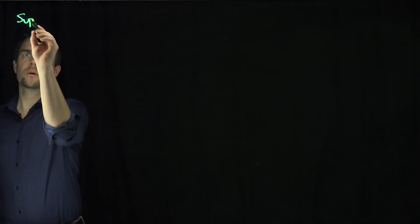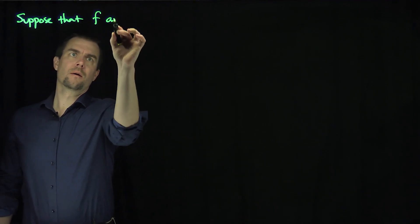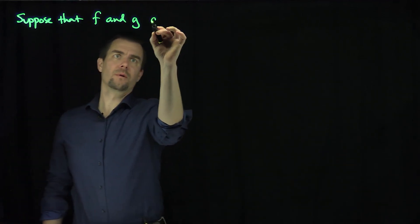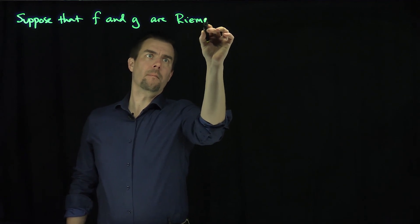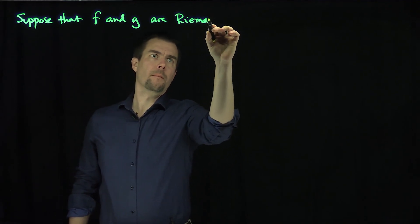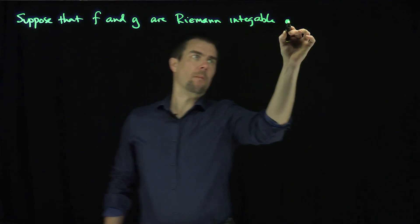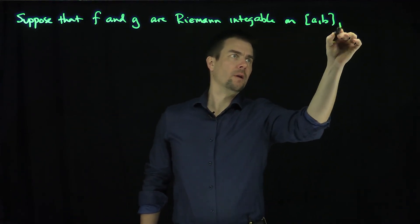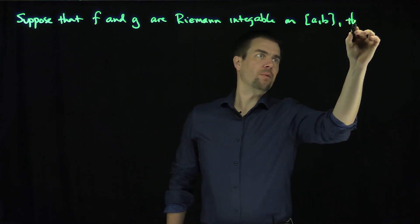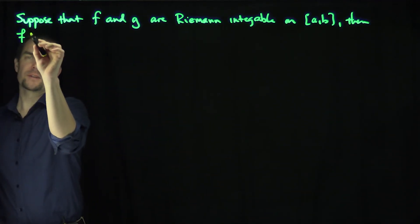Let's suppose that f and g are Riemann-integrable on [a, b]. Then f plus g is Riemann-integrable — and the same holds for f minus g.